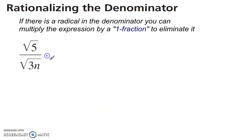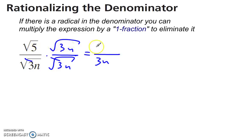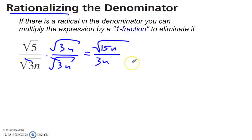Same deal here — multiply by whatever is in the denominator, and that cancels out the square roots. Up here, put those under the same radical: 5 times 3 is 15. And there we have rationalized the denominator.